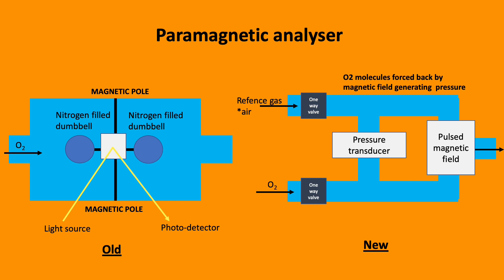Older paramagnetic oxygen analyzers contain two nitrogen-filled spheres. Nitrogen is used as it's not attracted to a magnetic field, and these rest over poles of a magnet. Oxygen is attracted towards the magnet, causing displacement of the dumbbells as they rotate, which is detected by a light source and photo detector.